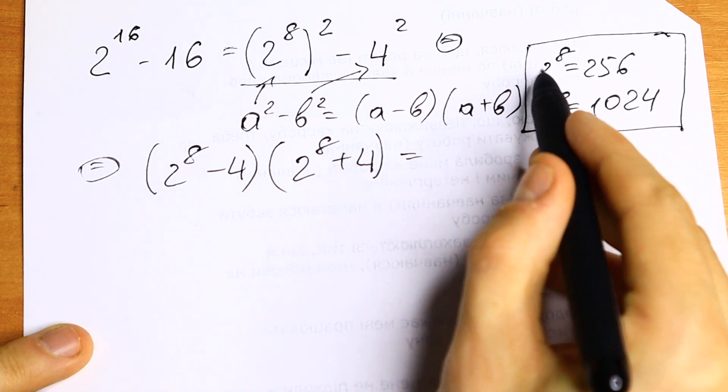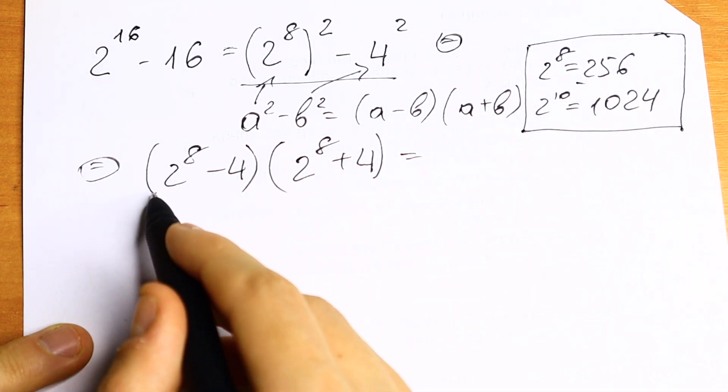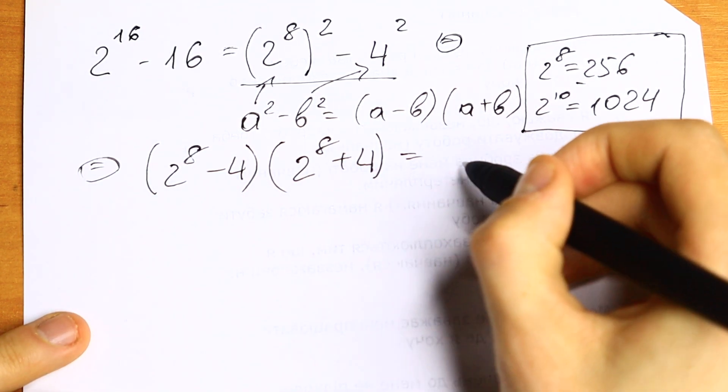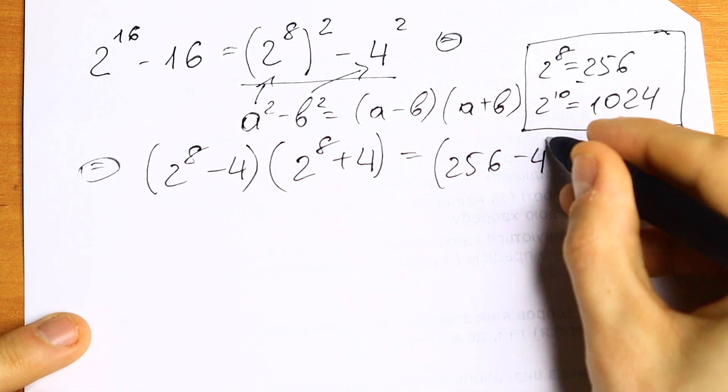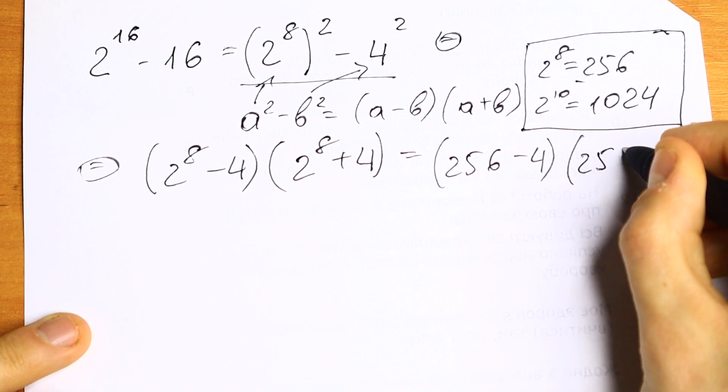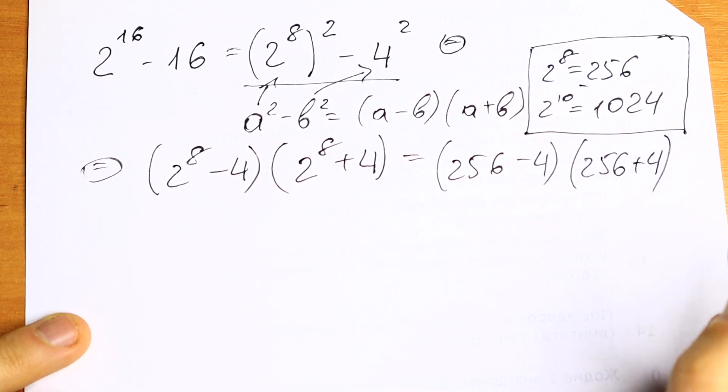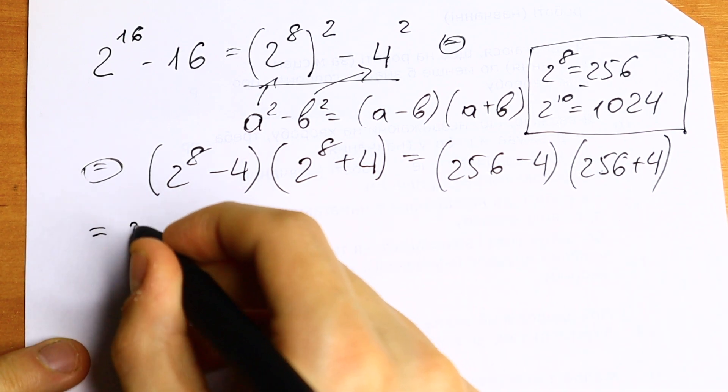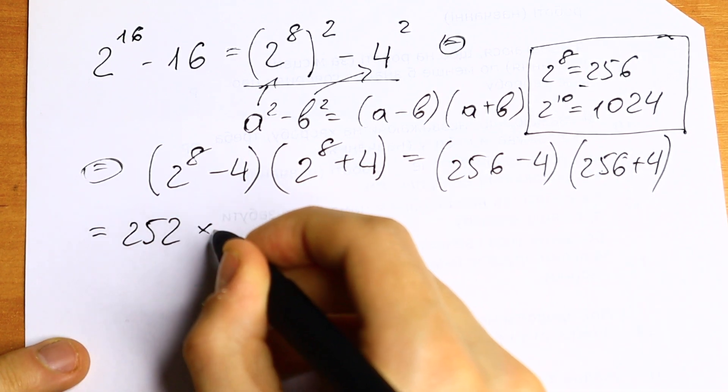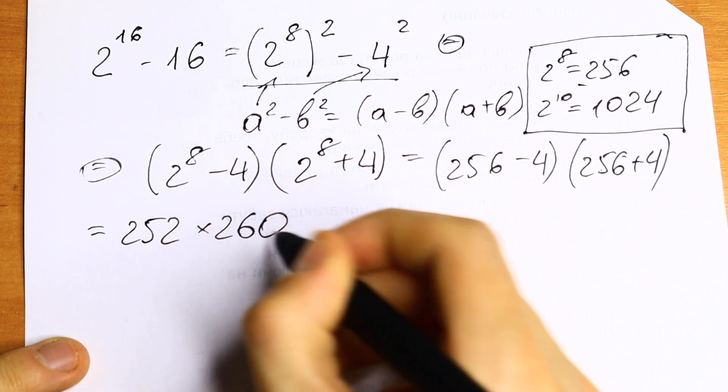As you can see, we can put this 256 instead of 2 to the 8th power. We will have 256 minus 4 times 256 plus 4. We can easily find these elements. We will have 252 times 260.